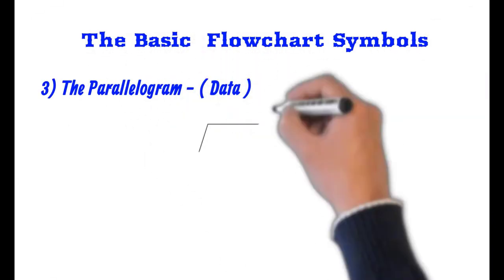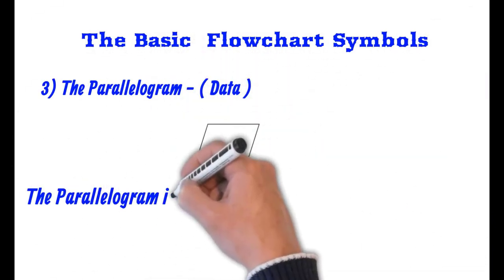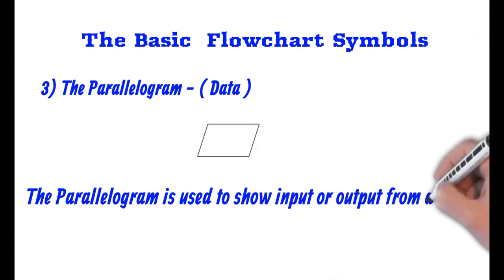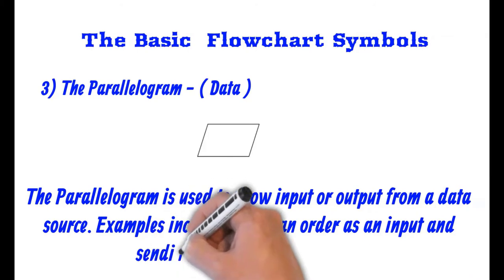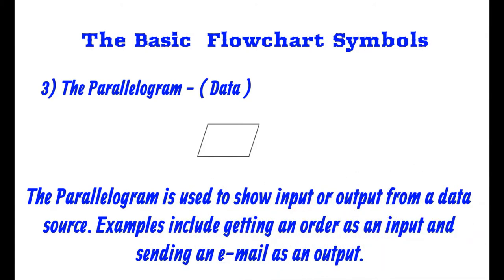The next is the parallelogram. The parallelogram represents data. When you think of the parallelogram, it's used to show input or output from a data source. Examples include getting an order as an input and sending an email as an output.